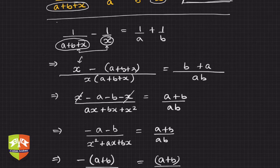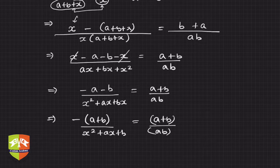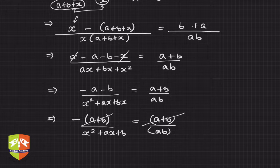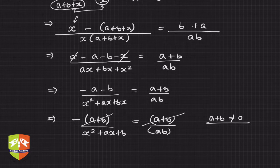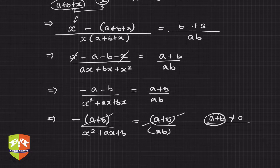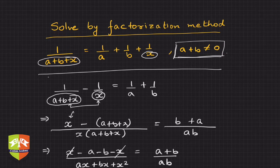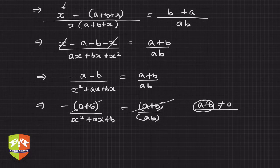Notice that (a + b) appears on both sides. We can cancel it, but the word of caution is: a + b must not be equal to zero. Because in cancelling, you are effectively dividing both sides by (a + b), and division by zero is not possible. Hence the condition a + b ≠ 0 was already given, so we can proceed to cancel it.